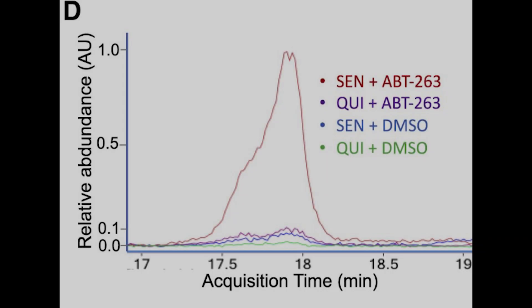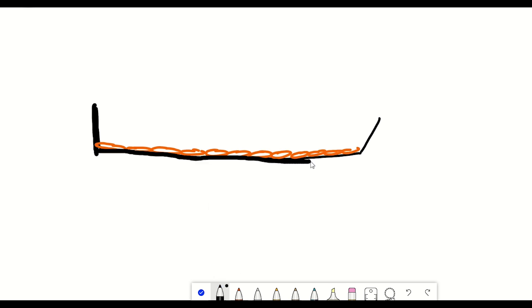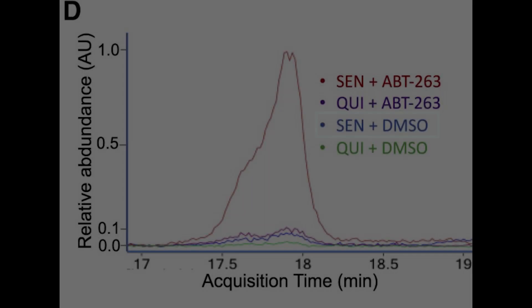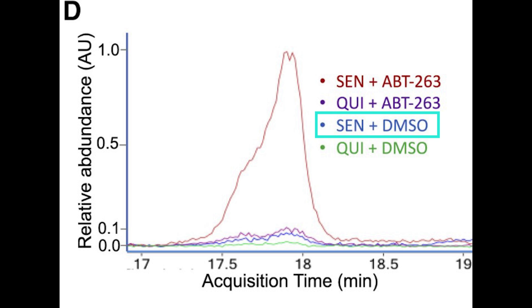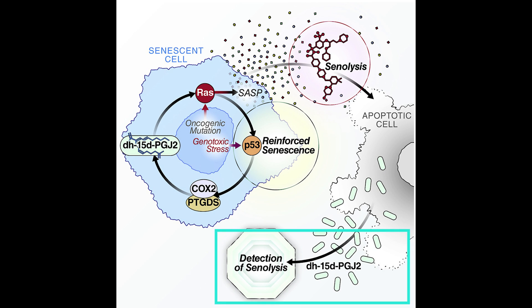This is seen clearly in this figure here, whereby they took conditioned media from senescent cells growing in culture, and analyzed the abundance of dihomo-15d PGJ2. And so by taking this conditioned media instead of the cells, they can analyze what's being secreted by the cells. So when you've got senescent cells just treated with DMSO, which in theory shouldn't have any impact on the senescent cells, you can see that the abundance of dihomo-15d PGJ2 is pretty low. However, when the senescent cells were treated with ABT263, which is a well-known senolytic, there is a great increase in the abundance of dihomo-15d PGJ2, suggesting that this prostaglandin could be used as a biomarker for senolysis.